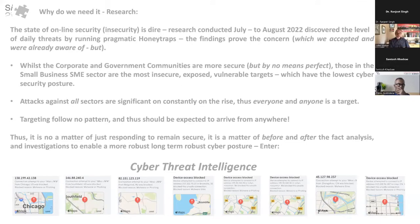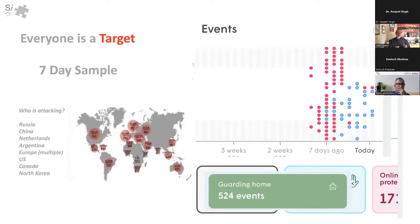I did a honeypot test on one machine over a seven-day period and amassed around about 500-odd attacks. As of today within 10 days, we've had 723 attack factors against one single box on my network. That's just one machine, and these are coming from various states. High on the agenda has been Russia, China, the Netherlands, Argentina, Europe, US, Canada, North Korea — in other words, everywhere. The scattergram shows the amount of attacks suffered within that five-to-seven-day period, around the 524 mark of events on a regular basis.